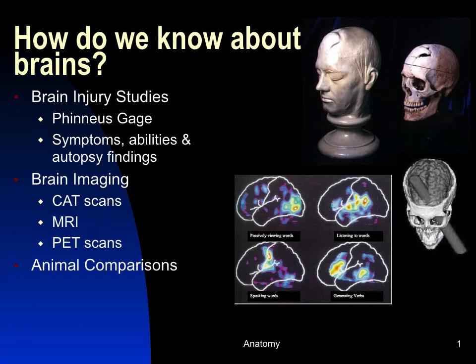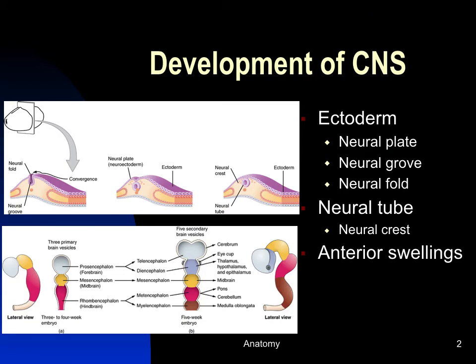We've also looked at animal comparisons. Another way we know about the brain is by studying its development early in the embryo. After the gut forms, there are three cell layers; the outer layer called the ectoderm gives rise to the skin but also to the nervous system. It forms a plate along the dorsal part of the developing embryo, and this plate begins to fold into a groove.